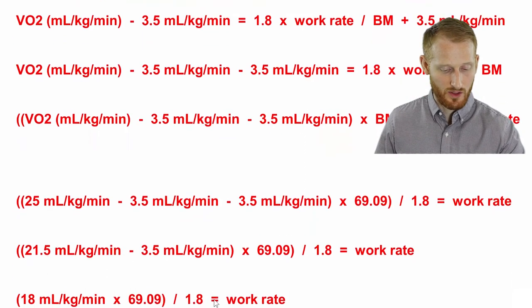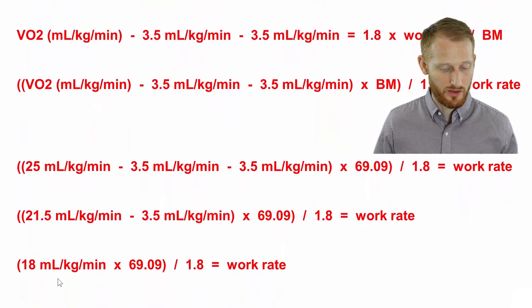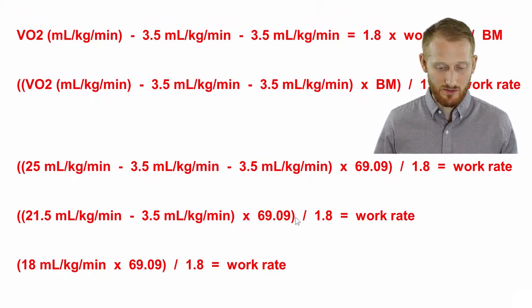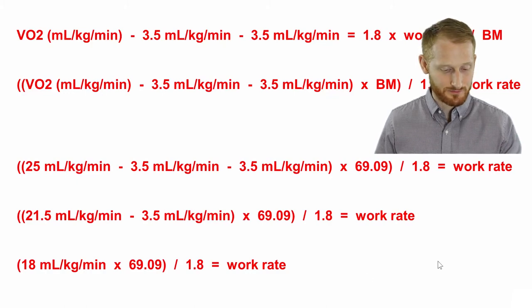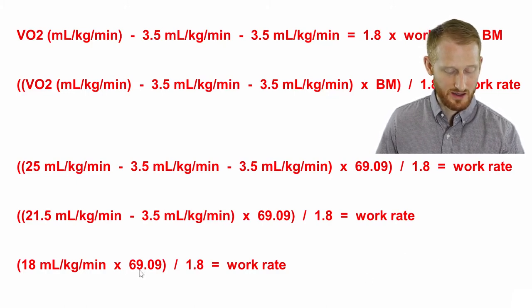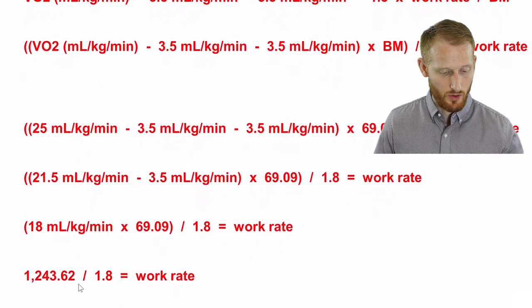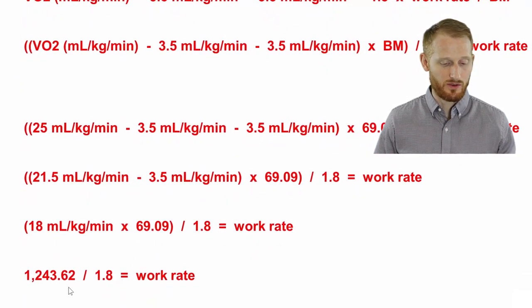Now we're going to start getting into the body mass in this 1.8 constant. So 18 times 69.09 is going to give us 1243.62.